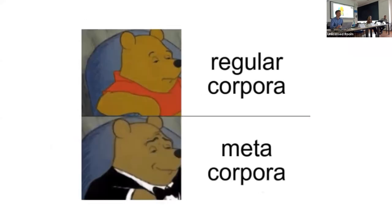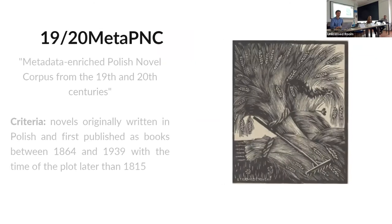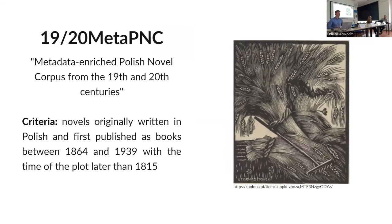Basically, we need a transition from regular corpora to meta-corpora. We believe we may have the answer, which is the 19-20 Meta PNC — Metadata-Rich Polish Novel Corpus for the 19th and 20th century. We gathered novels originally written in Polish and first published as books between 1864 and 1939, with the time of the plot later than 1815, which is the year of the Vienna Congress.